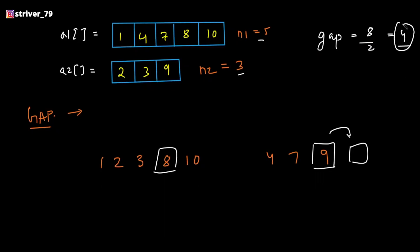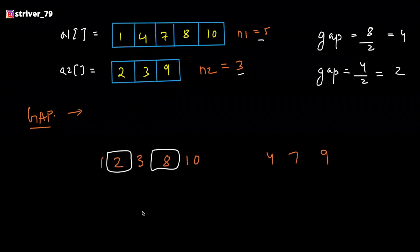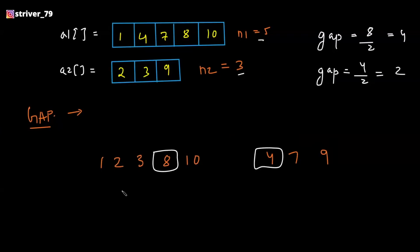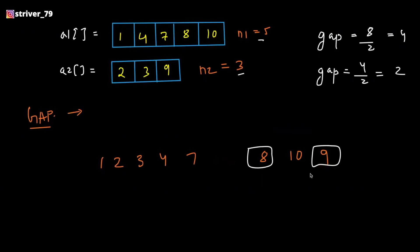Now we perform the next gap operation with gap equal to 4 divided by 2, that is 2. First pointer at index 0, second pointer 2 positions ahead. 1 is smaller than 3, no swap; 2 is smaller than 8, no swap; 3 is smaller than 10, no swap. Then 8 is greater than 4 — swap. Move ahead: 10 is greater than 7 — swap 10 and 7. Move ahead: 8 is smaller than 9, no swap. The pointer moves outside the second array, so we stop. Operations for gap 2 are done.